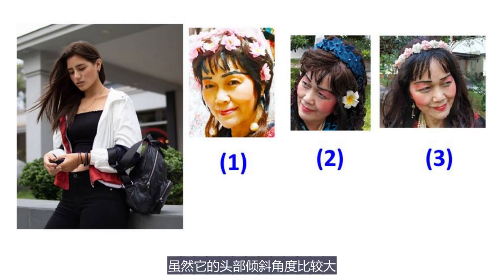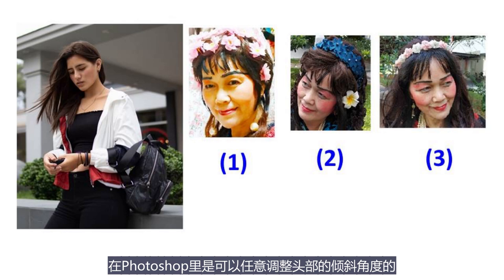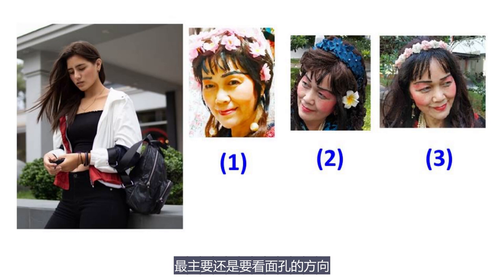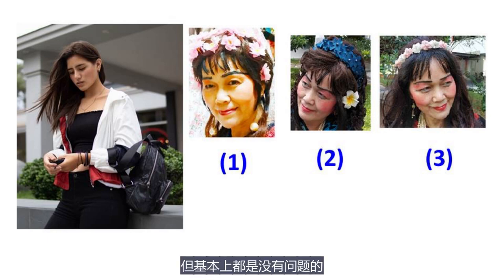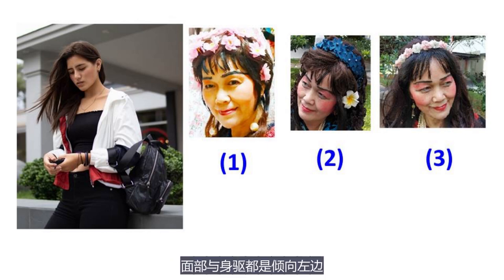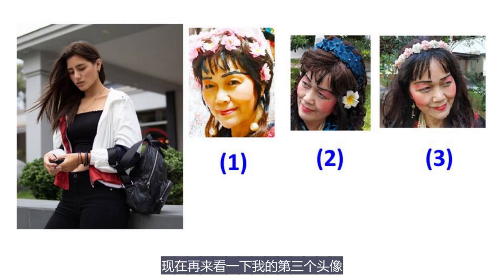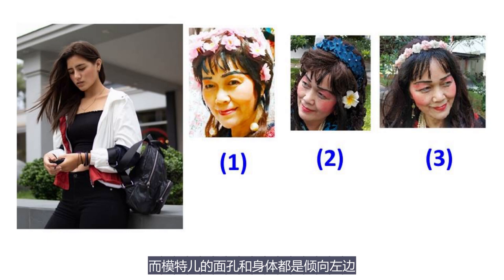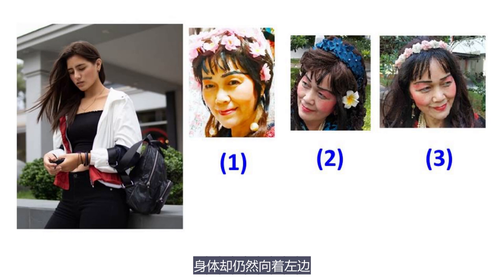我的第二个头像又怎么样呢？虽然它的头部倾斜角度比较大，但这是不要紧的，在Photoshop里是可以任意调整头部的倾斜角度的，最主要还是要看面孔的方向。这个头像的面孔方向也是倾向左边，与模特儿的面孔方向可能稍微有一点偏差，但基本上都是没有问题的，因为彼此的面部都是倾向左边，覆盖上去之后面部与身躯都是倾向左边，所以整体看上去也是很自然的。